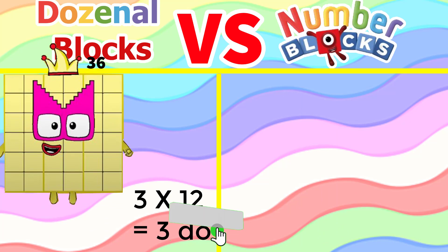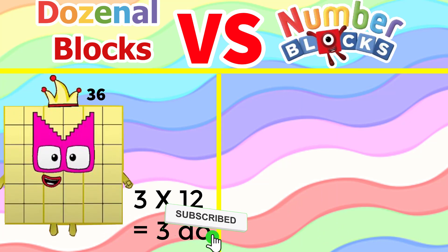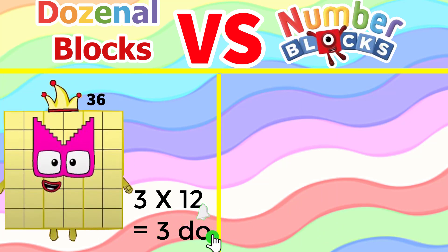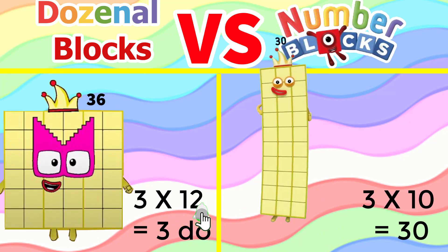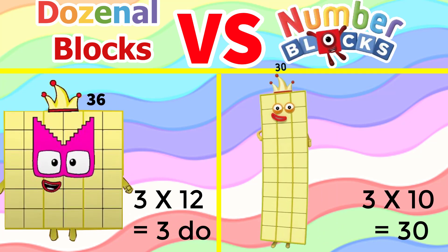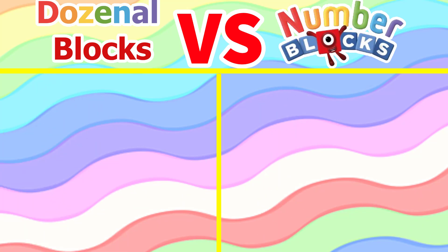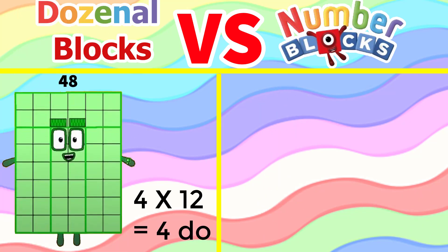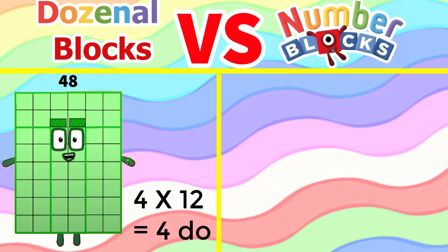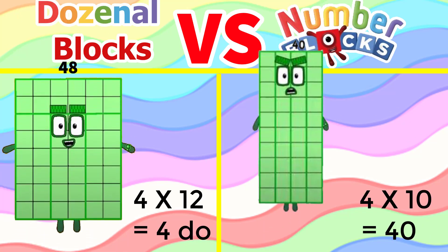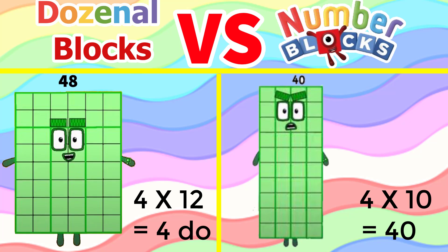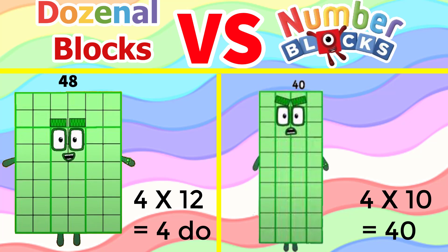3 times 12 equals 3 do. 3 times 10 equals 30. 4 times 12 equals 4 do. 4 times 10 equals 40.